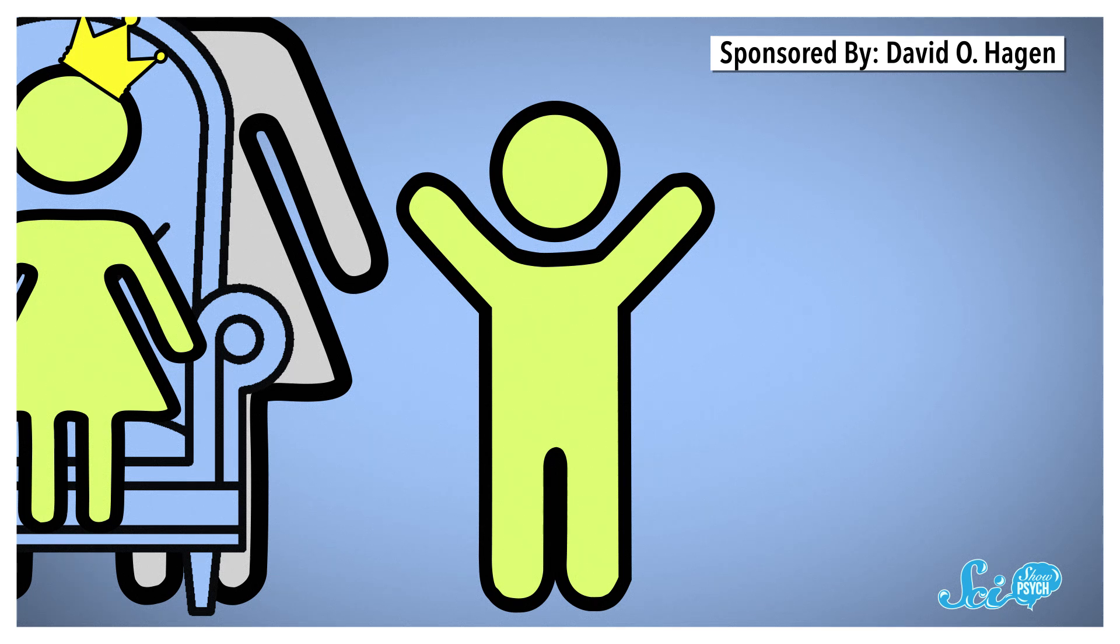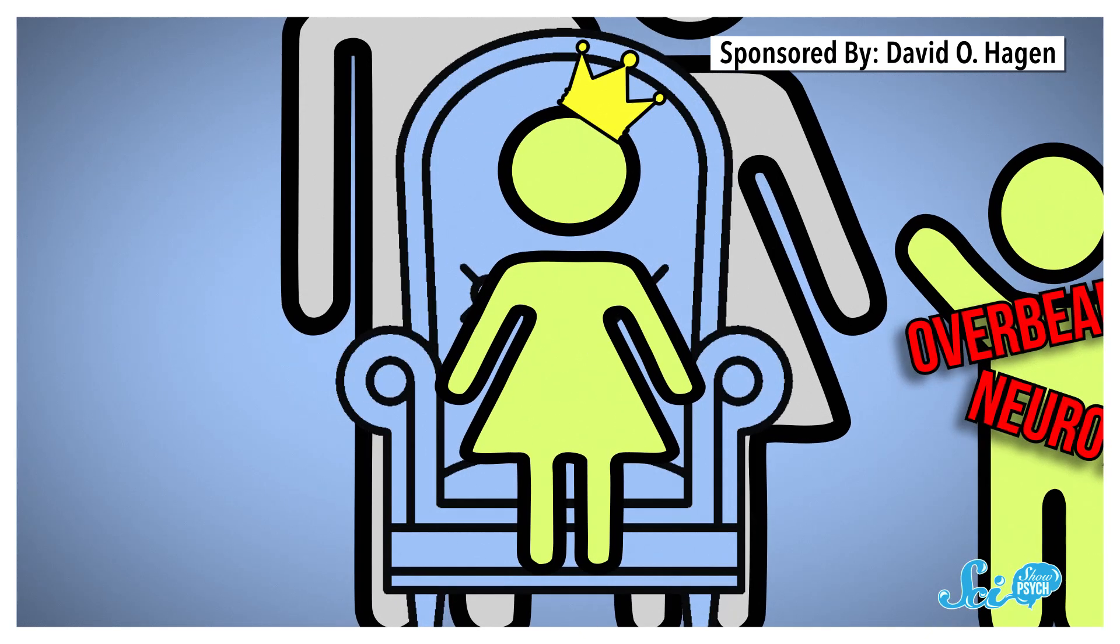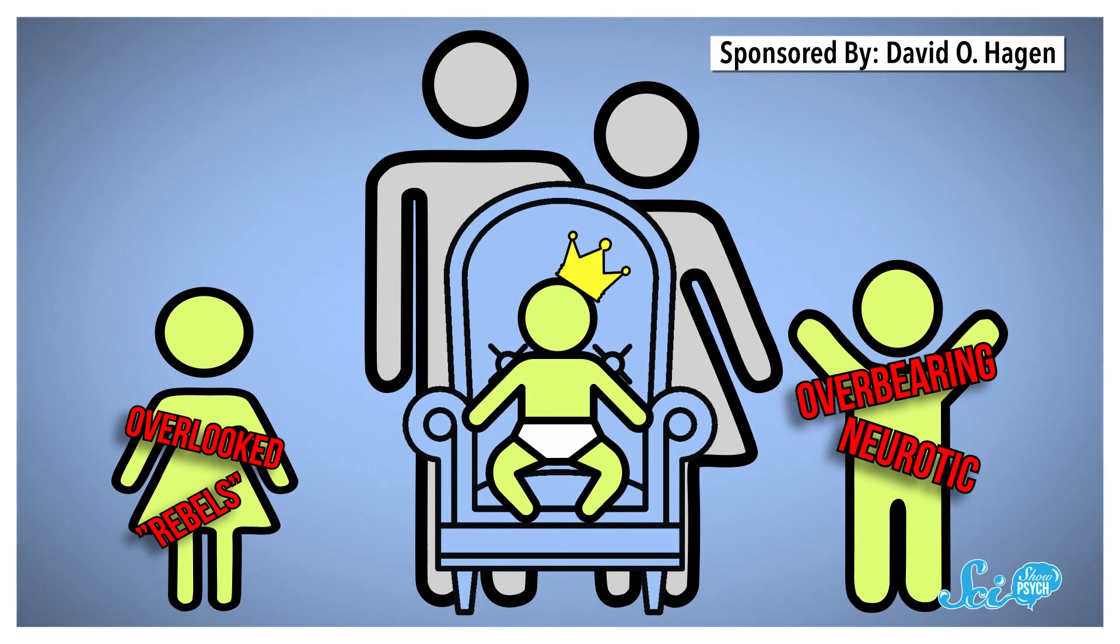After getting bumped, the oldest child ends up overbearing and neurotic, since they feel responsible for looking after their younger siblings. Middle-born children, on the other hand, are likely to feel overlooked and become the rebels of the family. And the youngest children might be babied by their parents, so according to Adler, they typically end up the most spoiled.